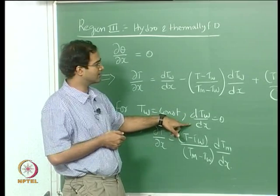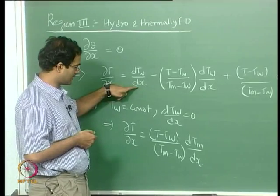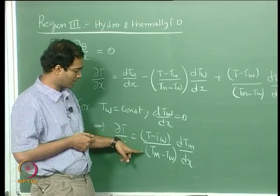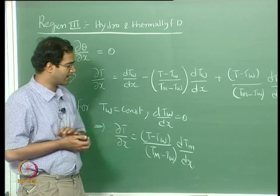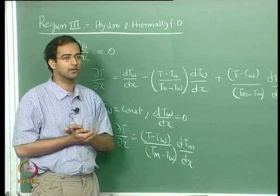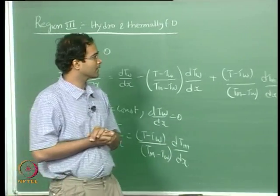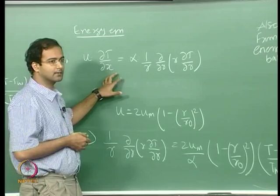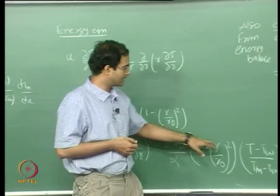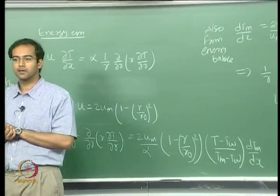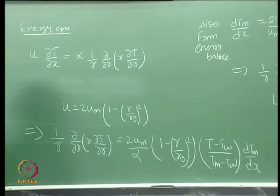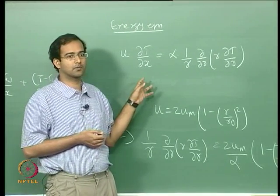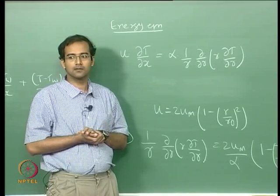When it comes to the case of constant wall temperature, DT_wall/DX is a constant, and therefore those two terms get nullified, giving DT/DX equal to (T - T_wall) / (T_M - T_wall) times DT_M/DX. Coming to the energy equation, we substitute this conclusion: instead of DT/DX we write it in terms of (T - T_wall)/(T_mean - T_wall) times DT_M/DX. Since we have already calculated the velocity profile as a parabolic profile, we substitute that into this expression.